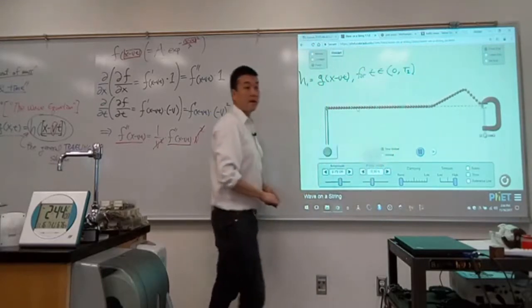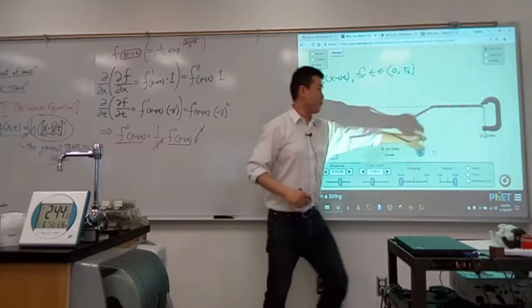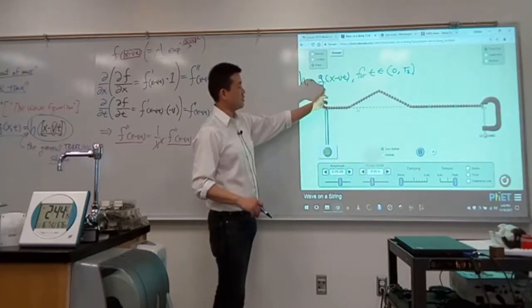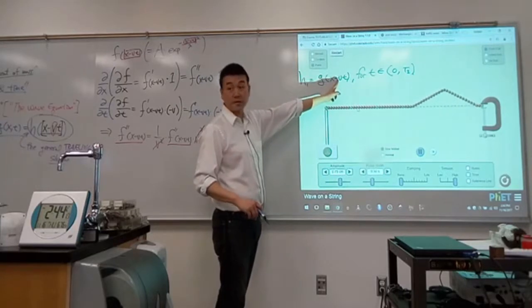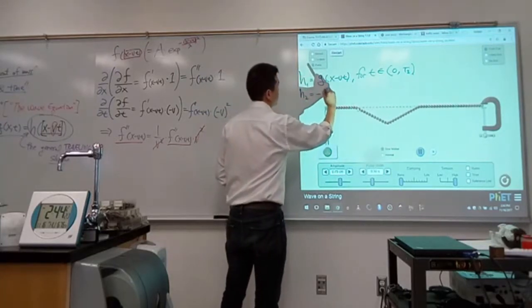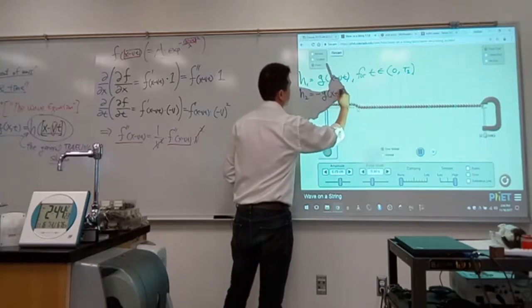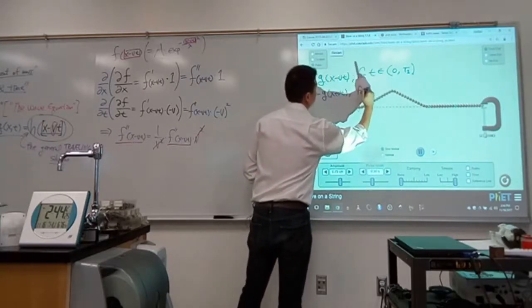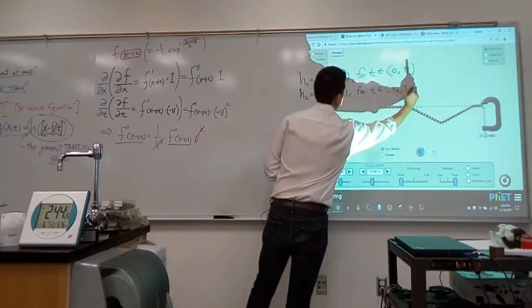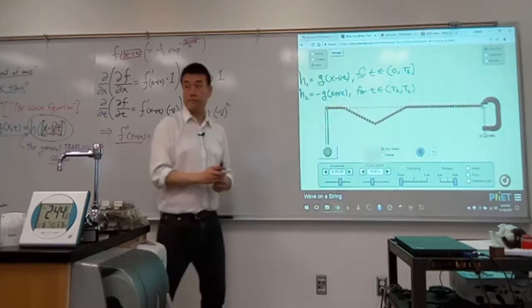And we could say for this time from T1 to T2, that it's essentially the same shape but with the opposite sign for velocity. We could say H2 is minus GX plus VT for time from T1 to T2.